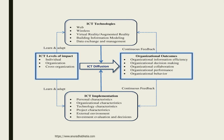There is another way of representing an organization where ICT diffusion takes place. In this ICT diffusion, the ICT technologies include web, wireless, virtual reality, augmented reality, building information modeling, and data exchange. Continuous feedback is obtained from organizational outcomes — that is, organization, information efficiency, decision making, collaboration, performance, and behavior. Feedback also goes to ICT implementation, covering personal characteristics, organizational characteristics, technology characteristics, project characteristics, external environment, investment, evaluation, and decisions. Then comes the ICT level of impact: individual, organization, and cross-organization. We learn and adopt ICT technology and implementation, there is diffusion, and we get continuous feedback for organizational outcomes.